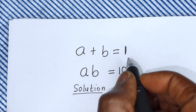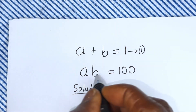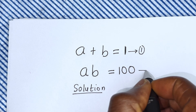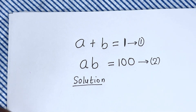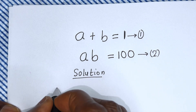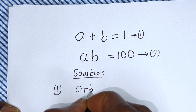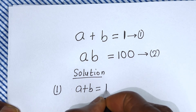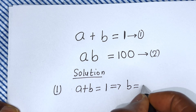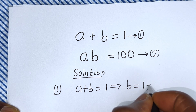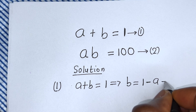a plus b is equal to one — let us call this equation one. ab is equal to 100 — let us call this equation two. From equation one, a plus b is equal to one, then b is equal to one minus a. Let us call this equation three.